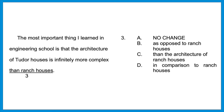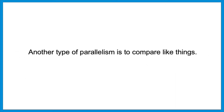Here's how this looks on a question: 'The most important thing I learned in engineering school is that the architecture of Tudor houses is infinitely more complex than ranch houses.' Same problem — the architecture of Tudor houses is being compared to ranch houses themselves. The answer is C: 'the architecture of Tudor houses is infinitely more complex than the architecture of ranch houses.' So another type of parallelism is to compare like things.